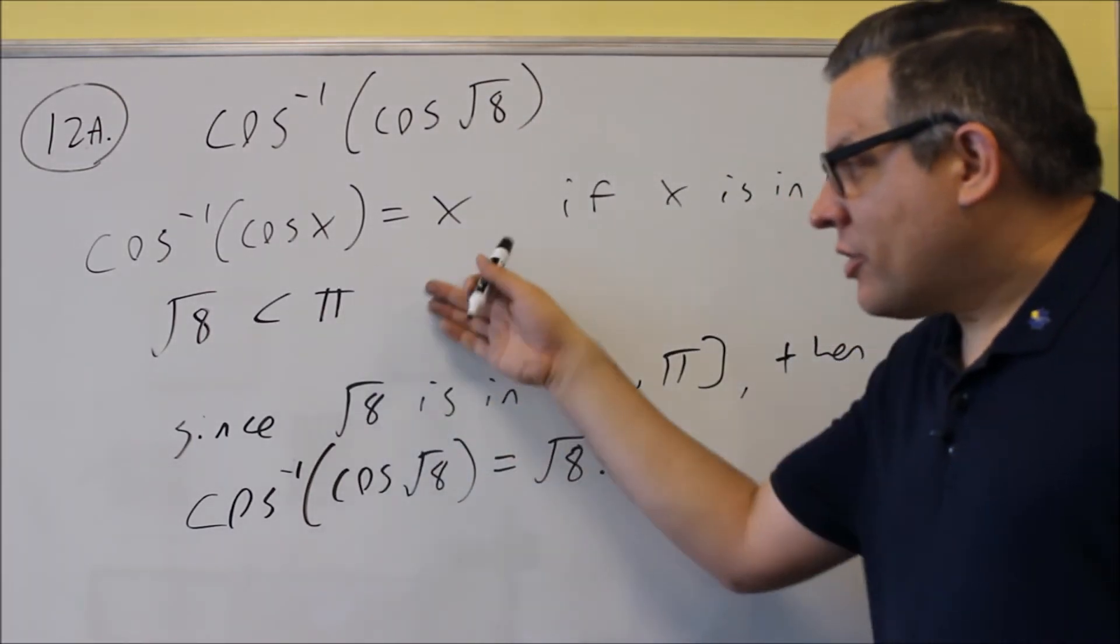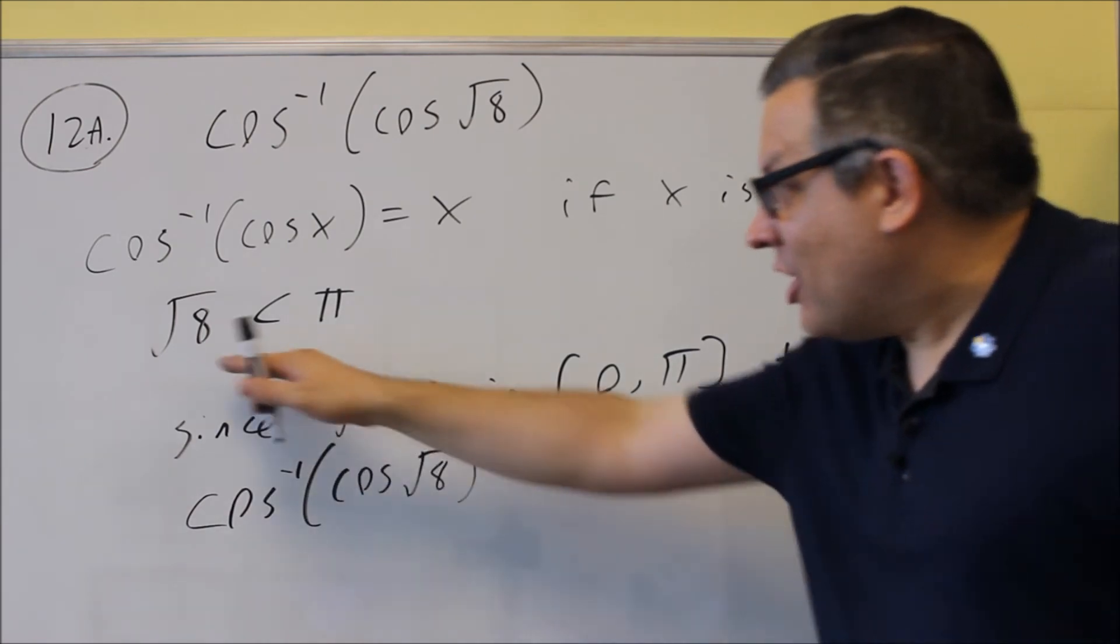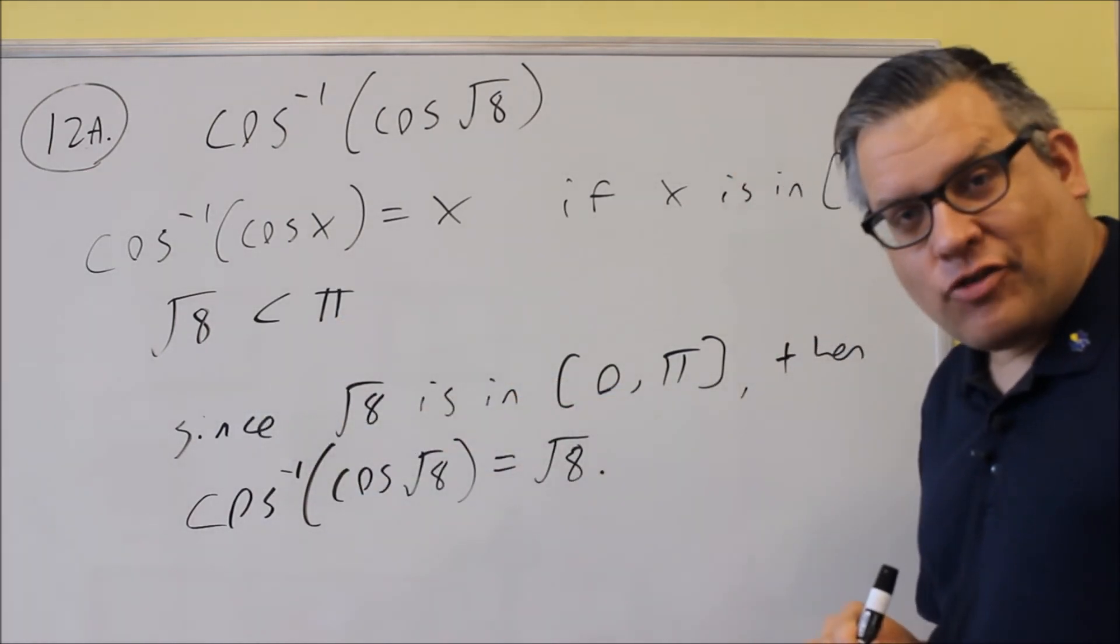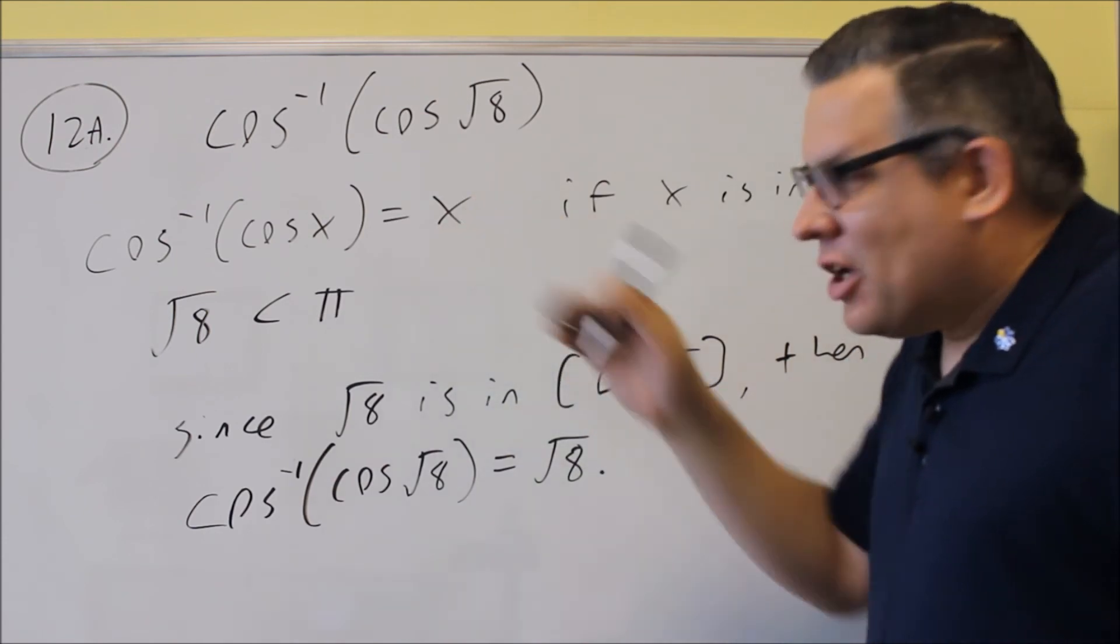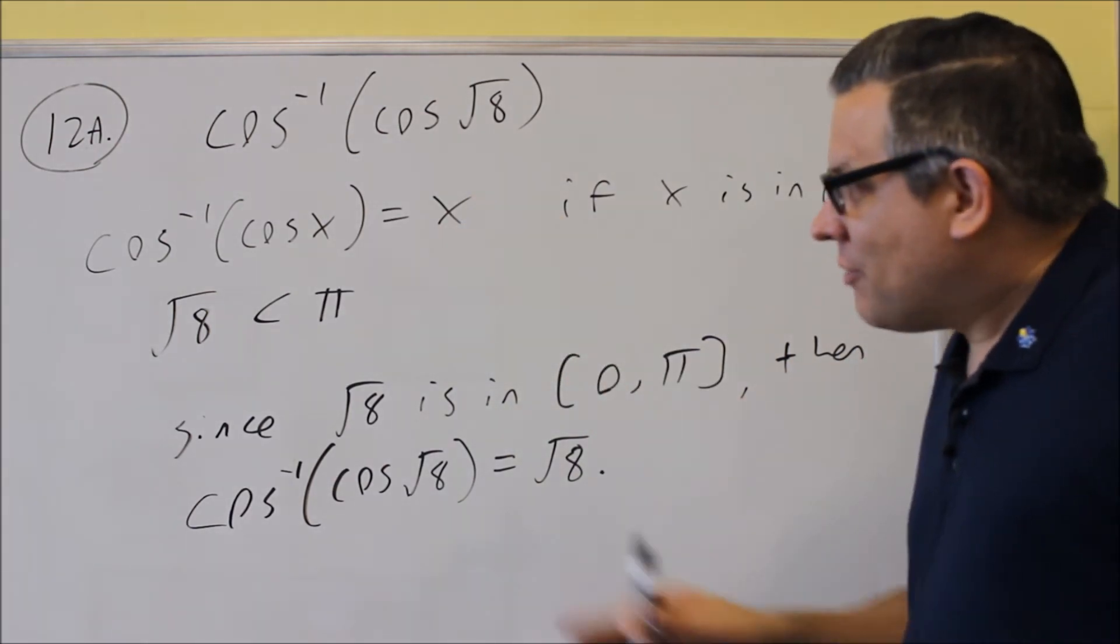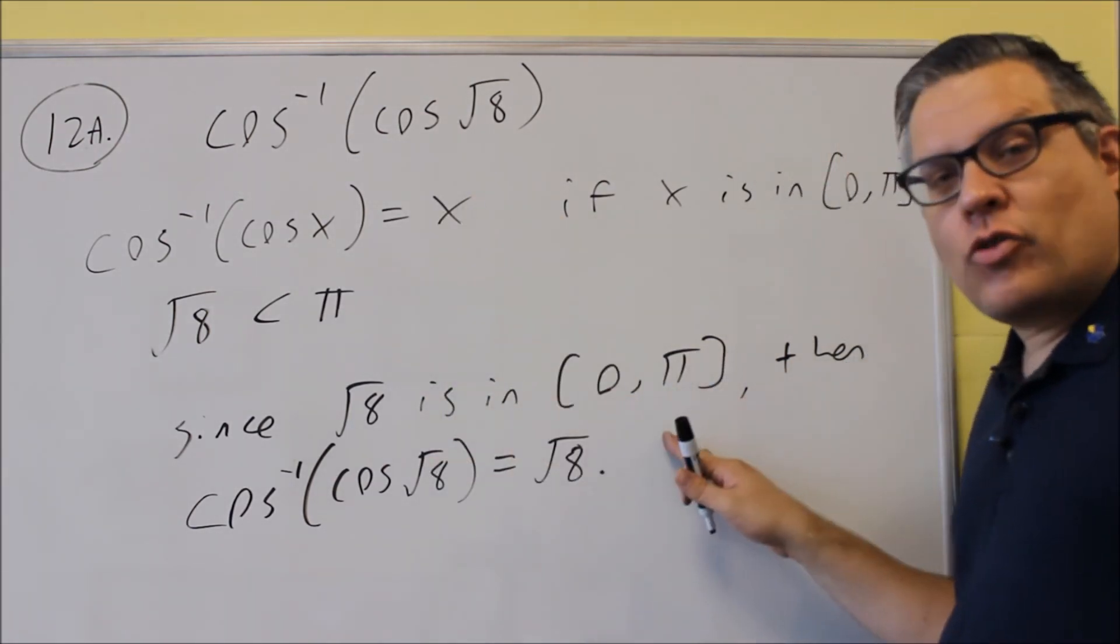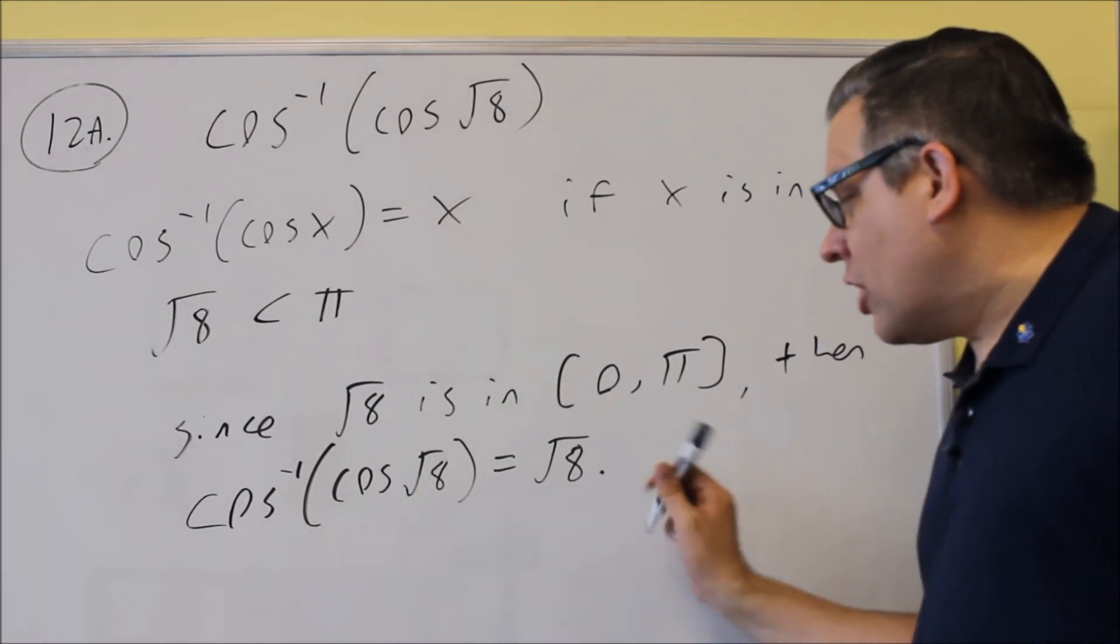If you're not sure about this, you can always double-check with a calculator to get the actual decimal values, but we were able to get it just by estimating, thinking about what these numbers should be. Square root of 8 definitely will be in that interval, and then we know it cancels out.